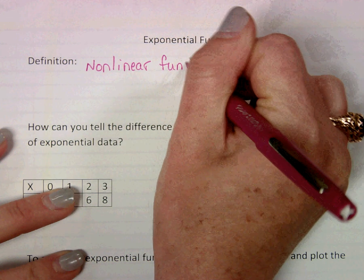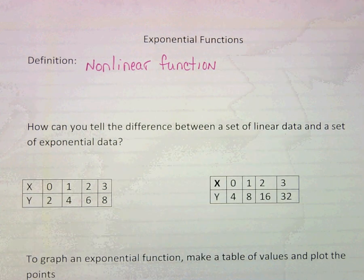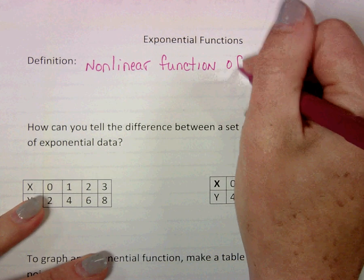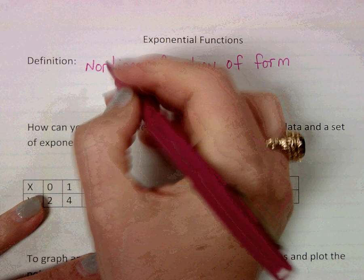So one thing that means is this is not going to be a straight line when we graph it. It's not going to be linear. And it's in the form, the equation is in the form,